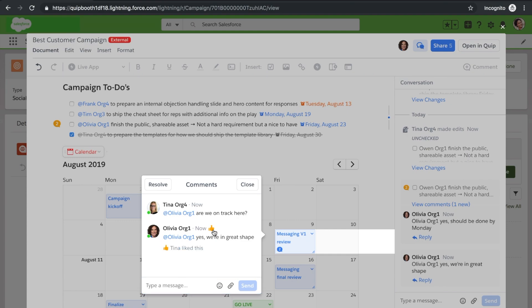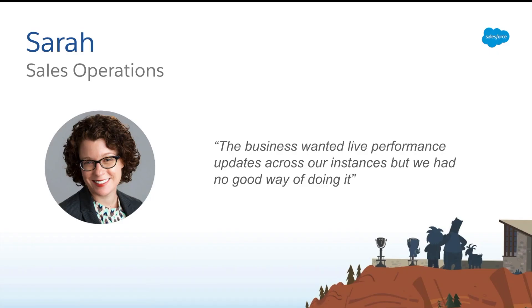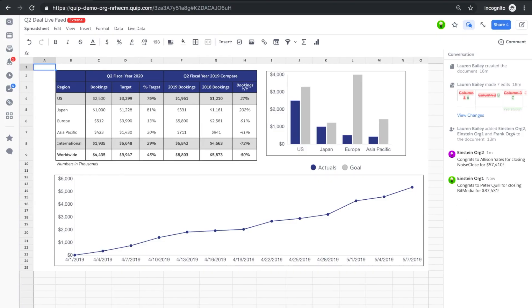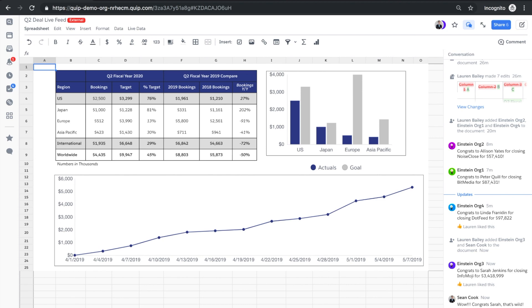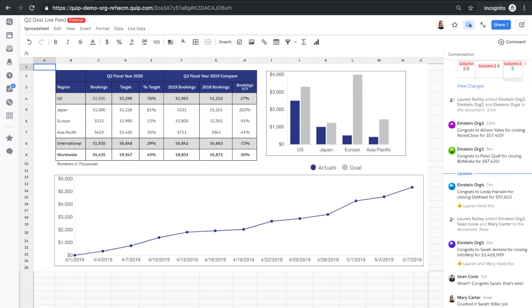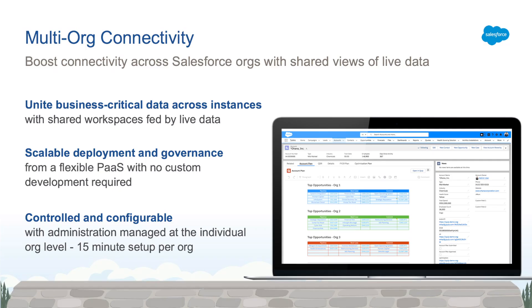Finally, let's take Sarah from sales ops, who struggled to provide a cohesive view of business performance across disparate lines of business. Leveraging Quip, Sarah can ingest real-time platform events across the disparate systems into one shared and engaging space to provide a live feed of opportunities closing across orgs to the broader team. All of this allows for proper governance across systems and lines of business while empowering end users to execute in parallel with a holistic view of the customer informing all aspects of execution.